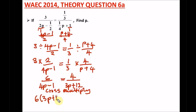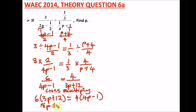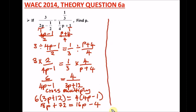When we cross multiply, six multiplies this and four multiplies this. We have six bracket 3P plus twelve equals four bracket 4P minus one. Opening the brackets: six times 3P gives us 18P, plus six times twelve gives us 72. Equal to four times 4P which is 16P, minus four times one which is four.